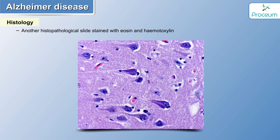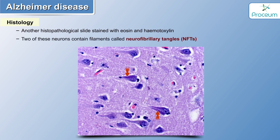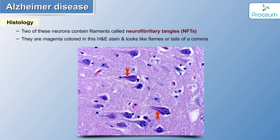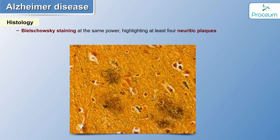Here is another histopathological slide stained with hematoxylin and eosin. Two of these neurons contain filaments called neurofibrillary tangles, which are magenta colored and look like flames or tails of a comet. Another image shows Bielschowsky staining at the same region, where at least four different neuritic plaques are visible — extracellular in nature — and multiple axons with washed away myelin can also be seen. That concludes our video on Alzheimer's disease.